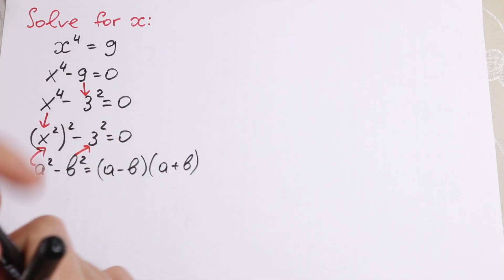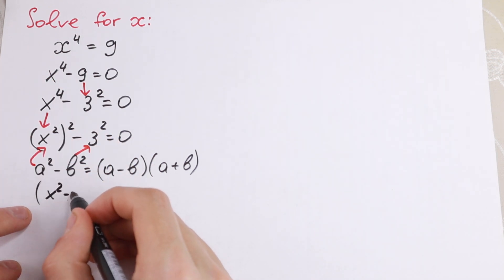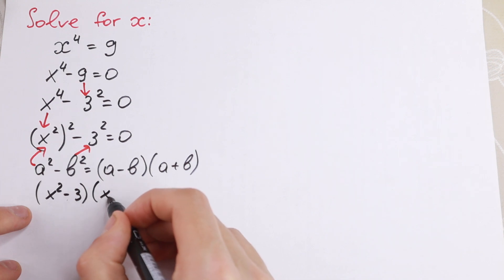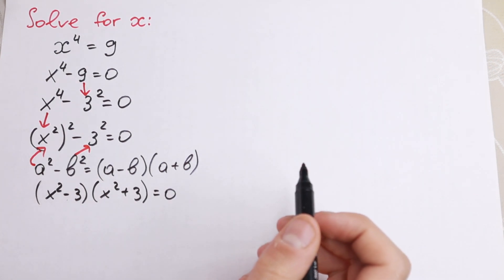So as a result, what we will have? We will have x squared minus 3 times x squared plus 3 equal to 0.